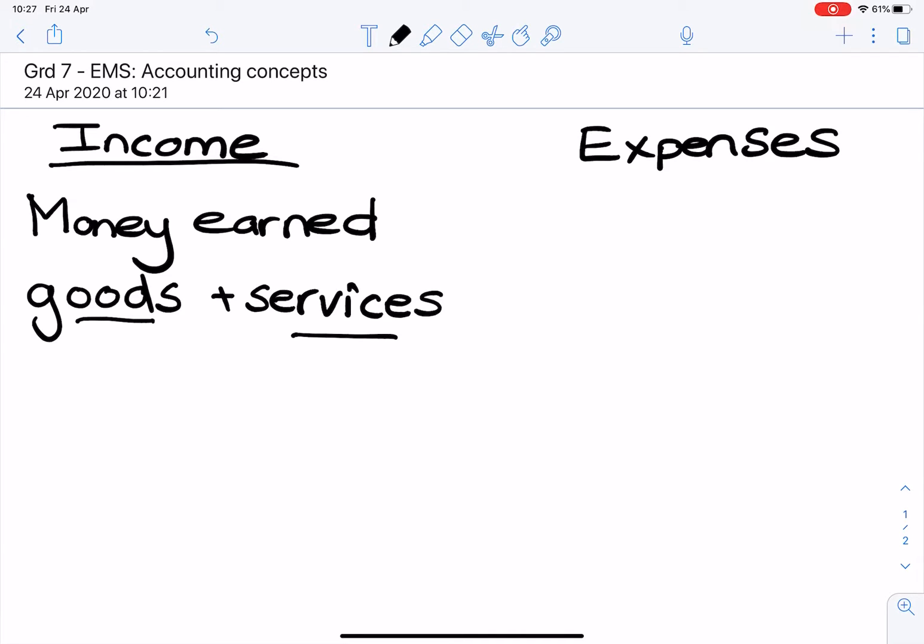Examples of how income can be earned in a business: income from sales, selling goods; income from providing services; rent income; and interest income.